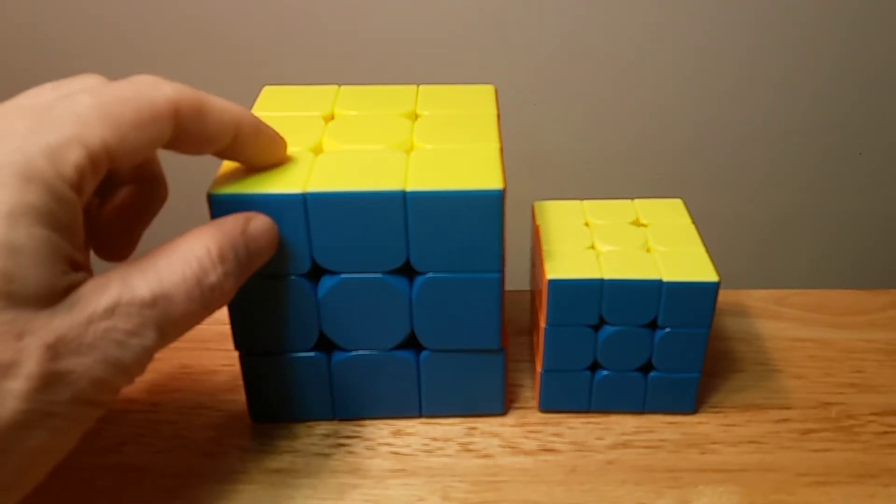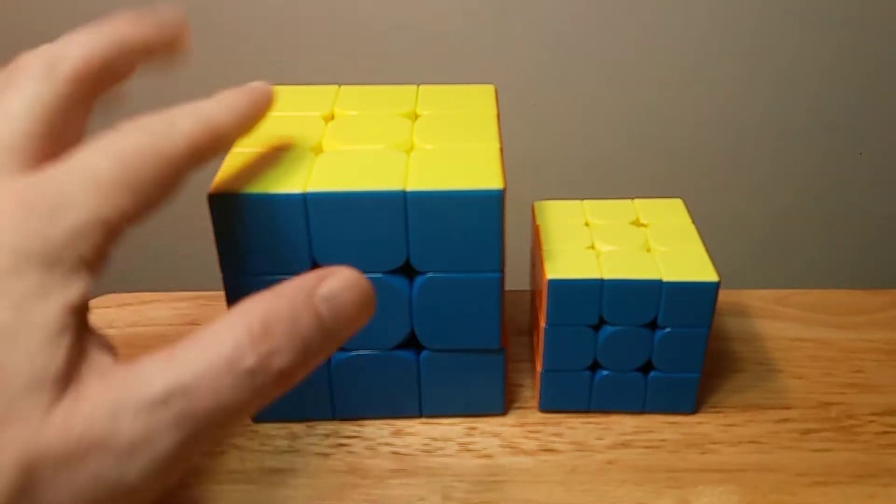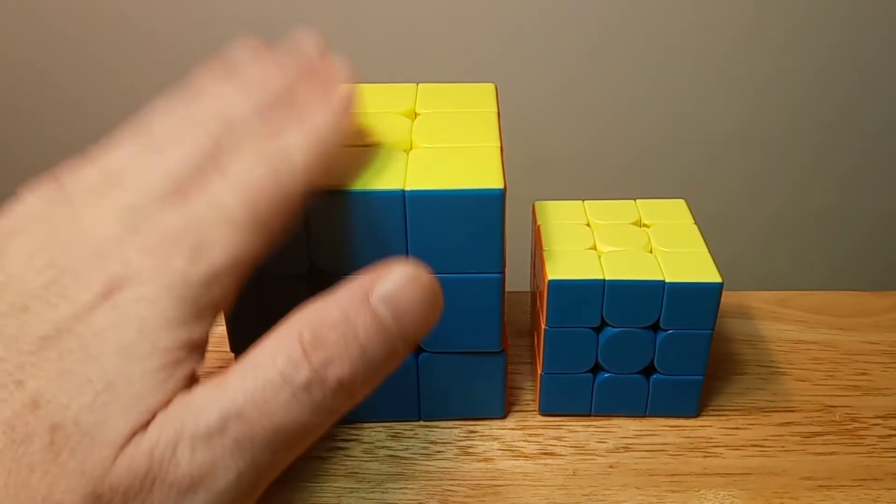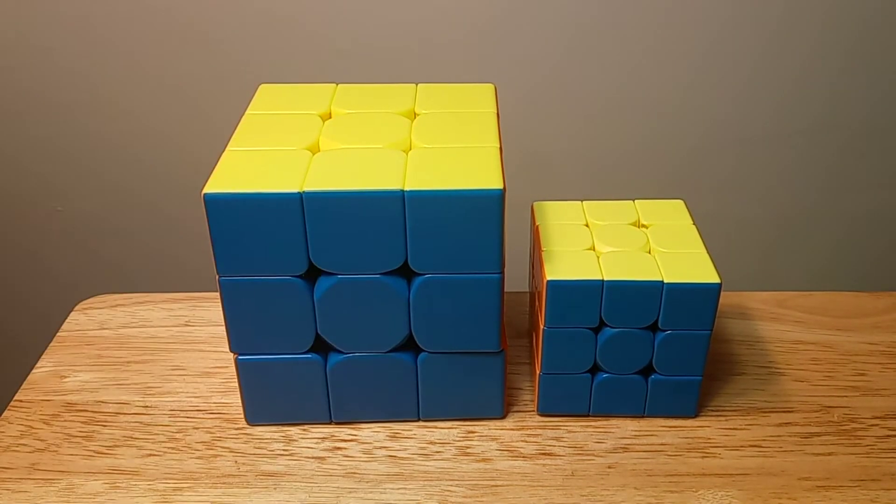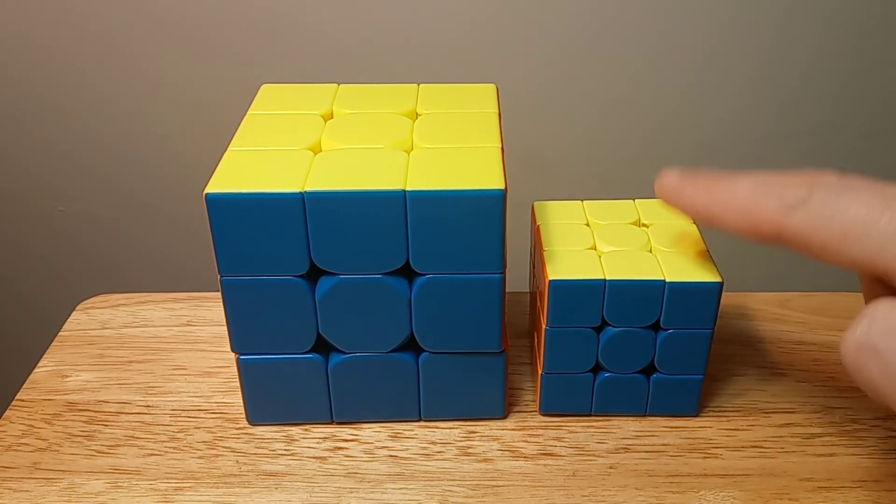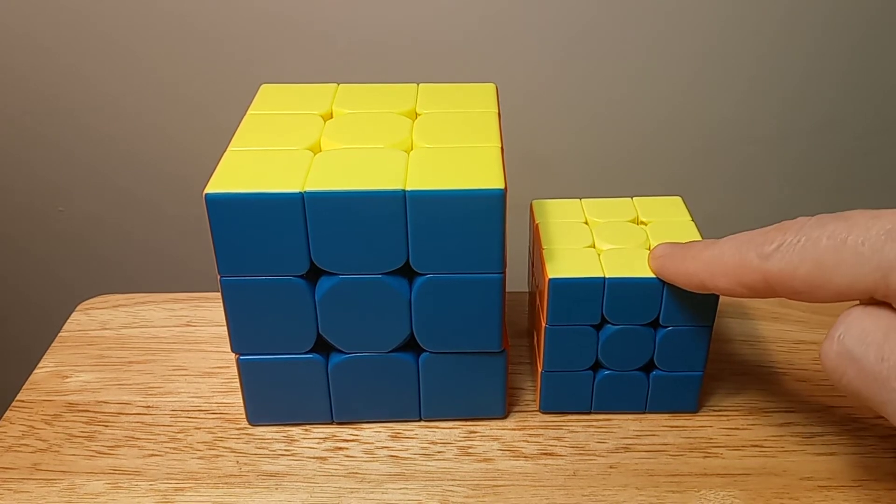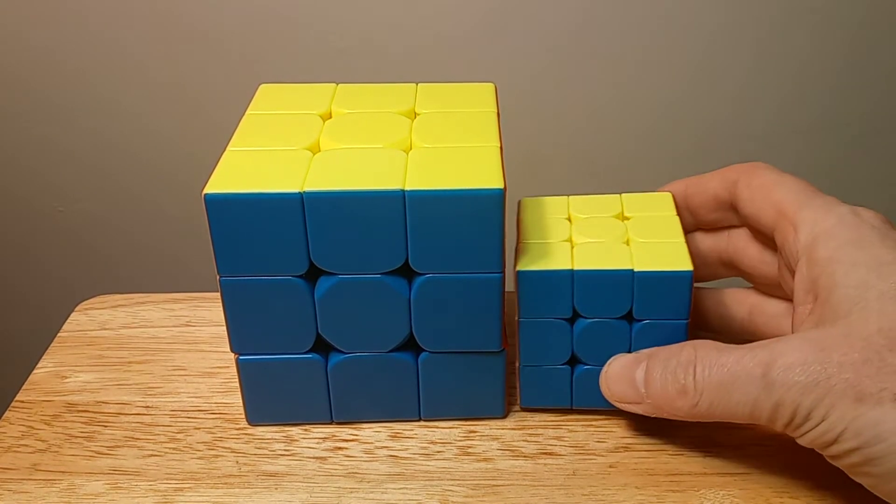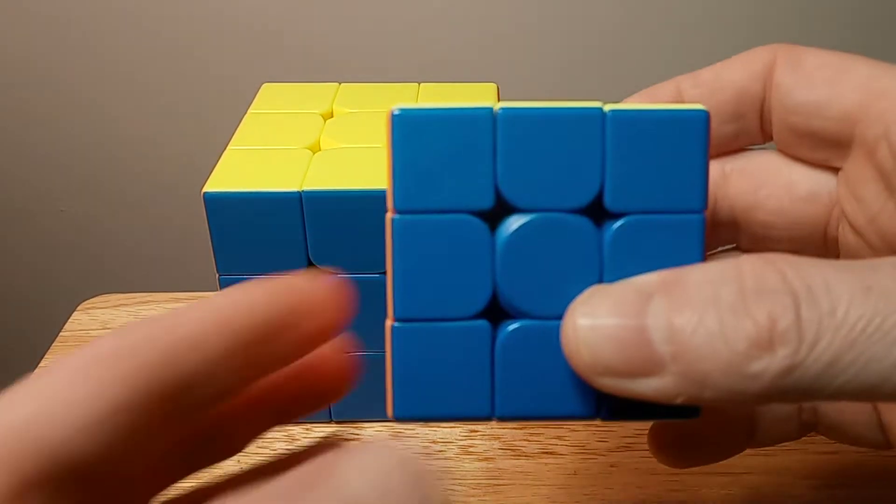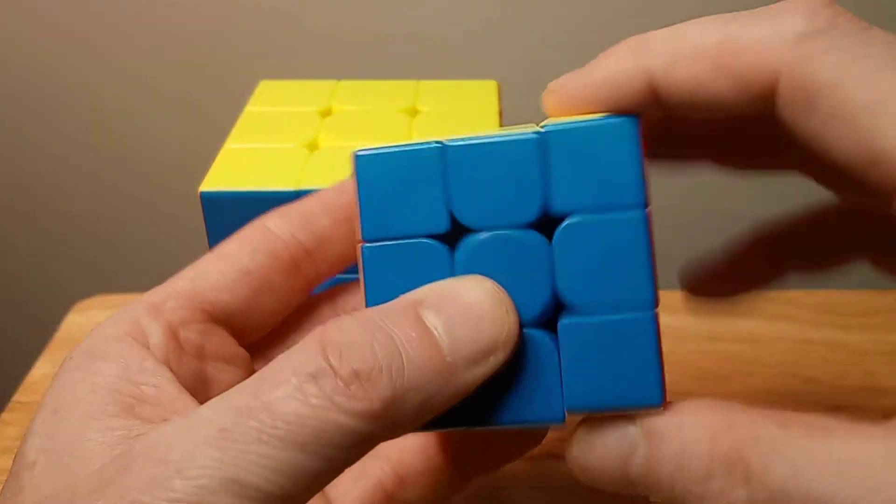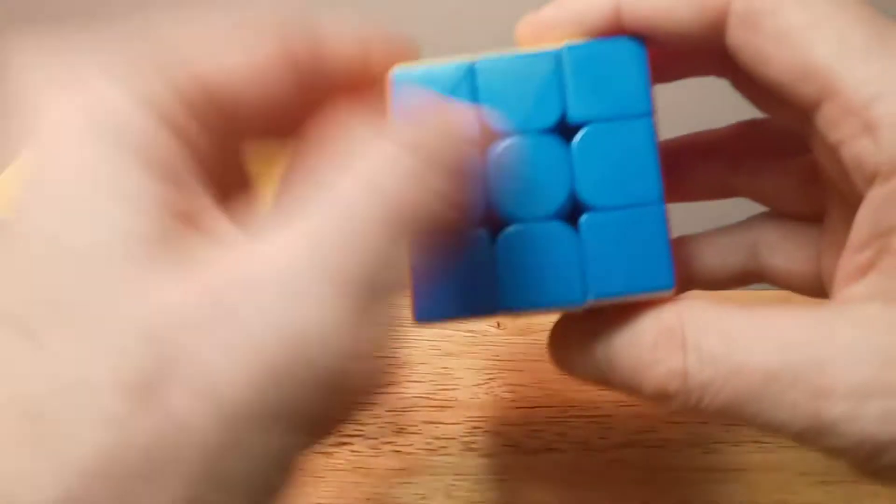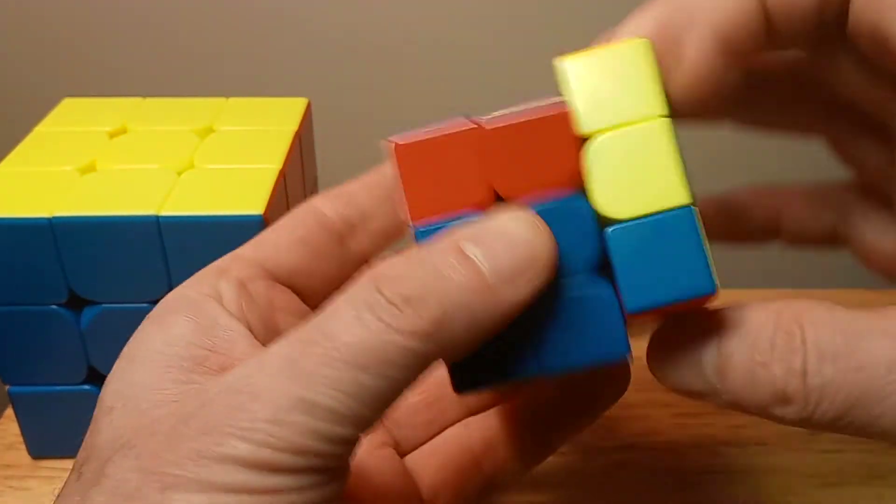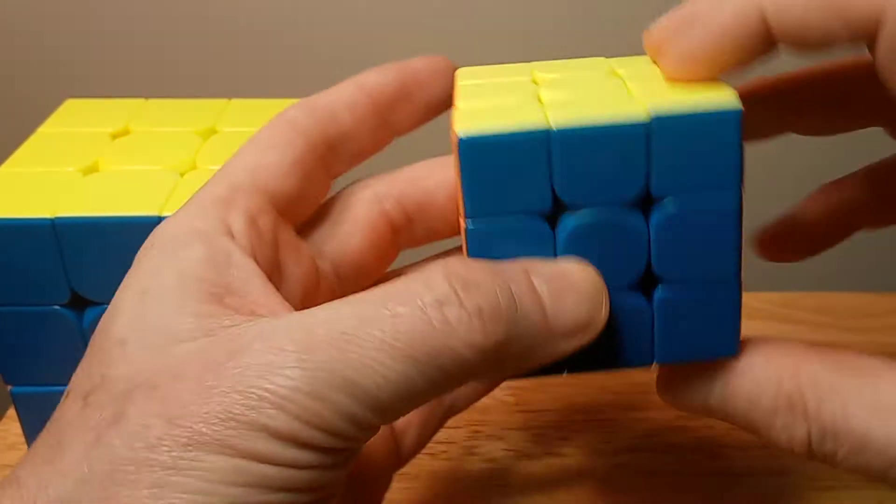So I just got this one in the mail. This is an amazing 3x3, really great. This is the Qi MS Magnetic. Now this is the regular standard size 3x3 that you use for your general solves. This is the regular size.